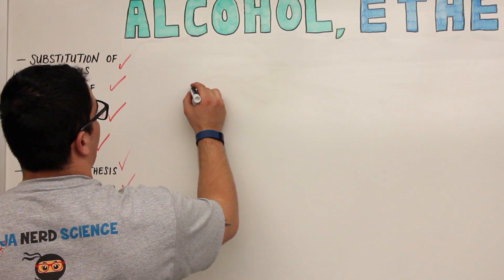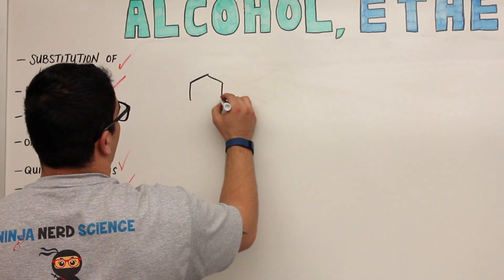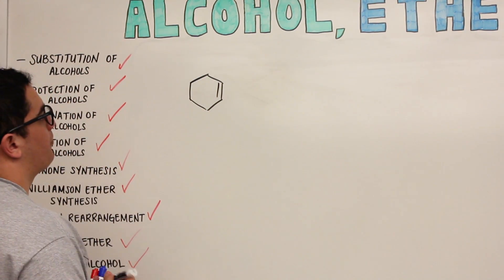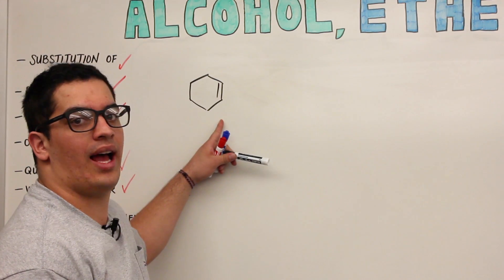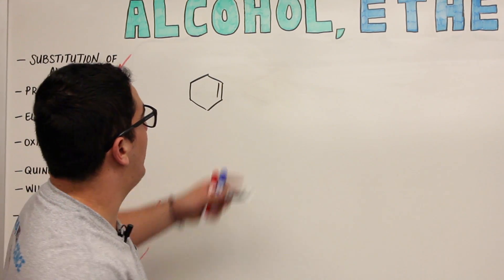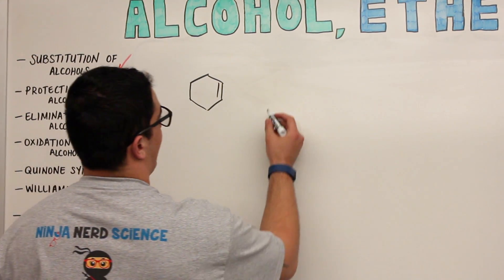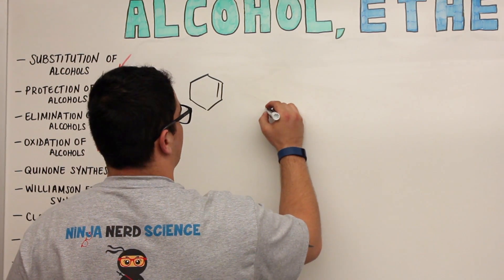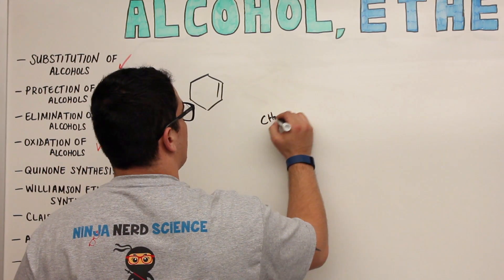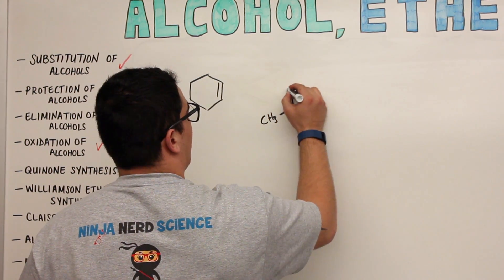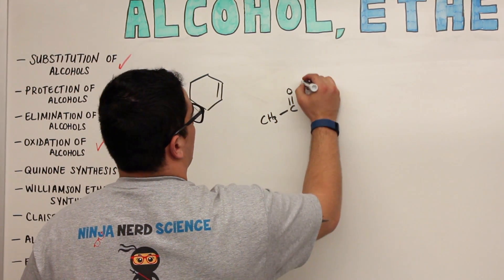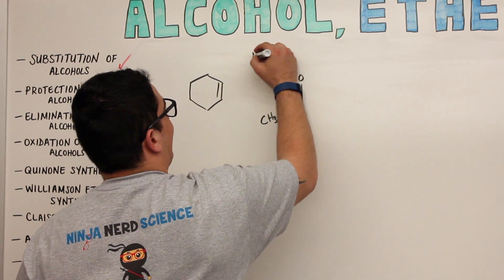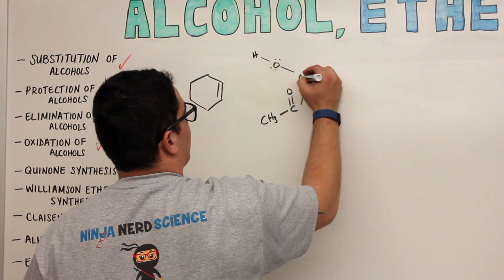So let's say we take cyclohexene. What I'm going to do is take cyclohexene and react it with what's called a peroxy acid. So I'm going to draw a generic peroxy acid here: CH3, C double bond oxygen, OOH. There's our peroxy acid right there.